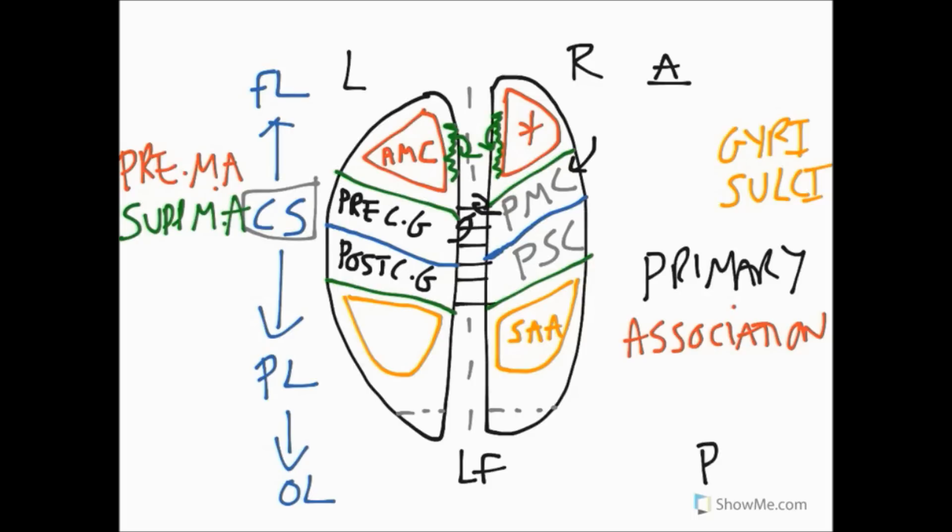The sensory association area is an area that sits in the parietal lobe and is much less well-defined than the primary sensory cortex. In fact, it's worth saying that the association areas in general are about six times larger than the primary areas and also less well-defined.